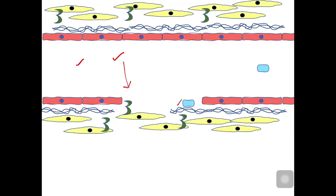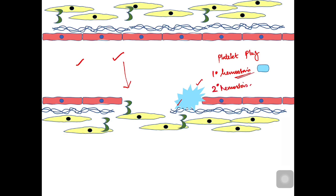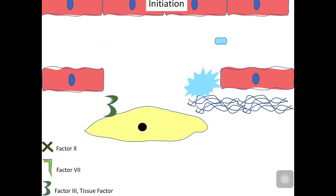Whenever there is endothelial injury or damage, the blood factors come into contact with this tissue factor, and the platelets are also exposed to collagen. The platelet has receptors for binding to collagen; when it binds to collagen it gets activated, recruits other platelets, and finally forms a platelet plug. This is called primary hemostasis. Today we are going to see the phenomenon called secondary hemostasis, which involves the coagulation factors and forms the fibrin mesh.